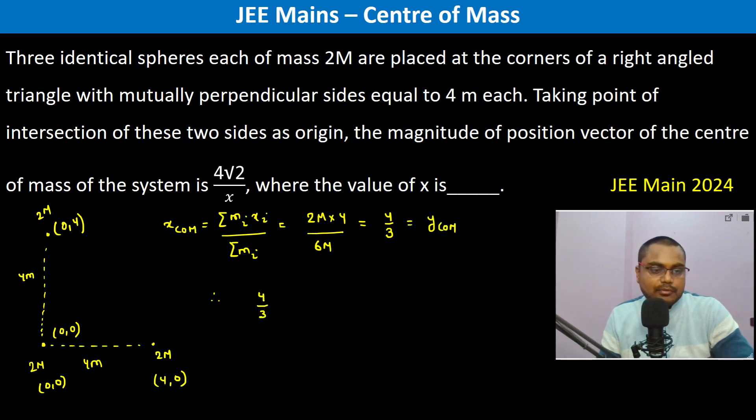This is actually 4 by 3 root 2. So therefore, the value of x is going to be 3. Thank you.